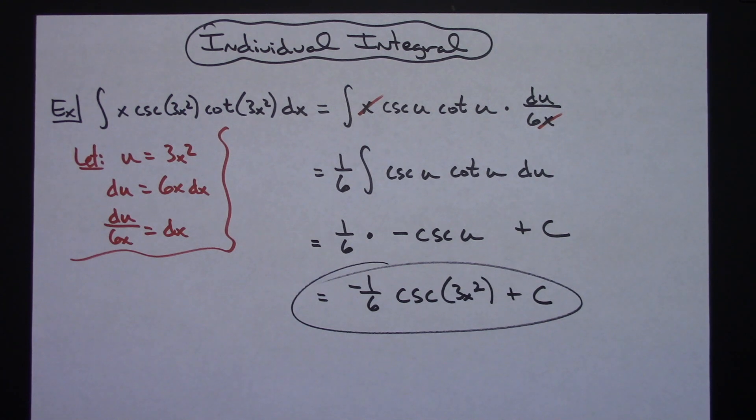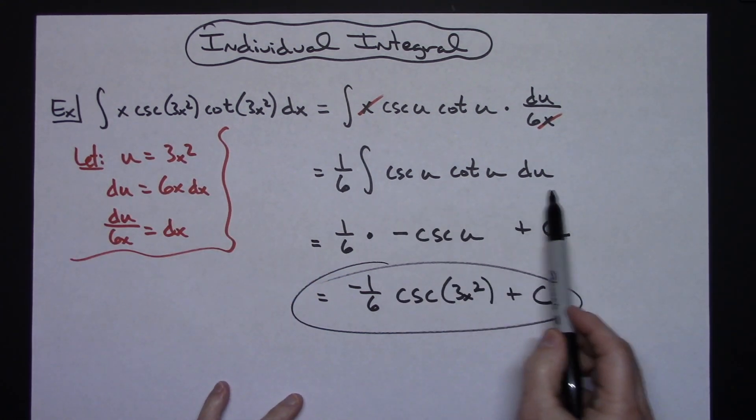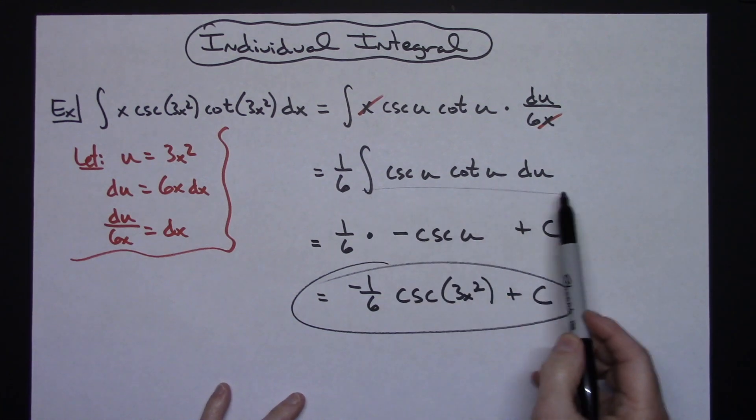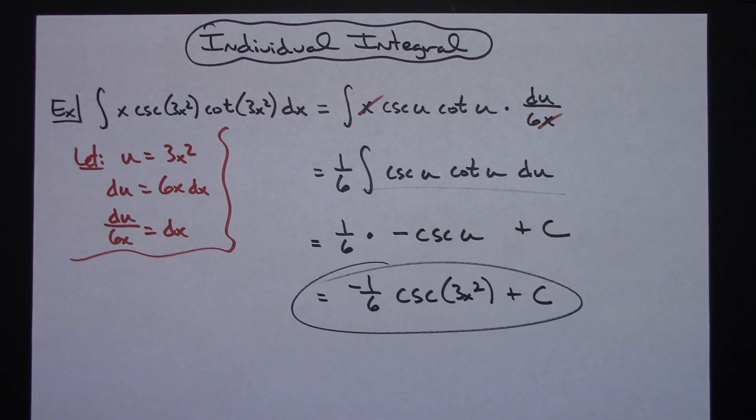So definitely a straightforward u-substitution problem that you would learn very early on. You pick that inside function for your u. It works out pretty nice, and then getting over to here you have to have this trig integral memorized in order to be able to complete the problem.